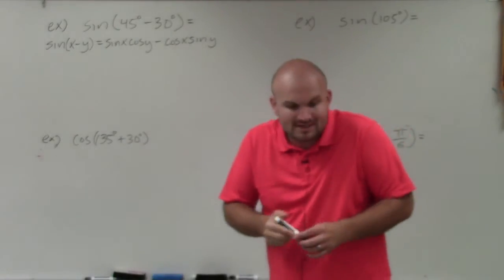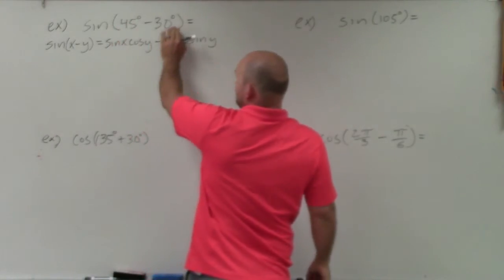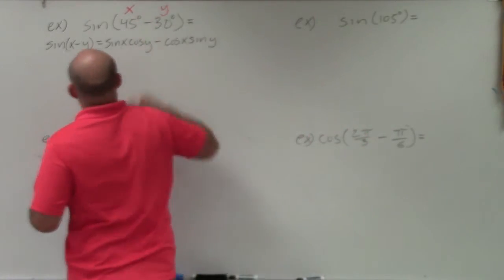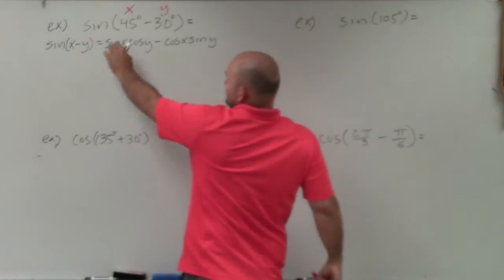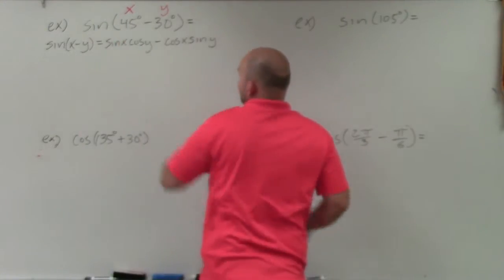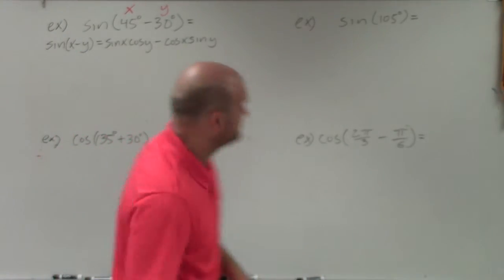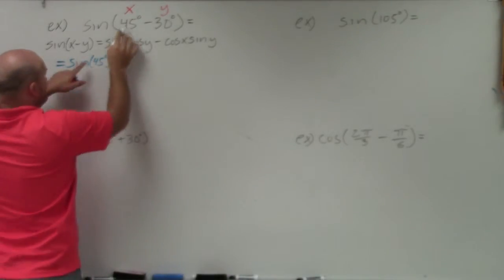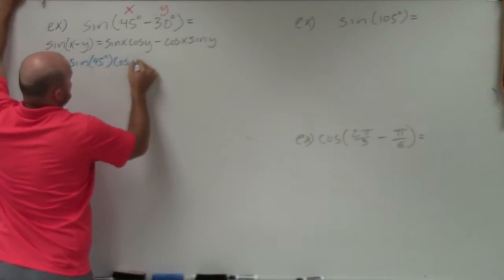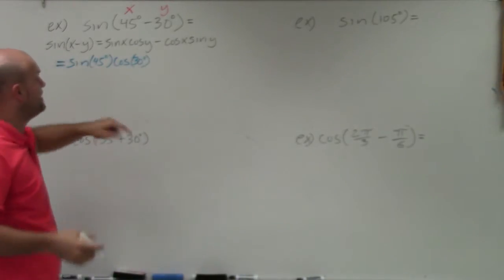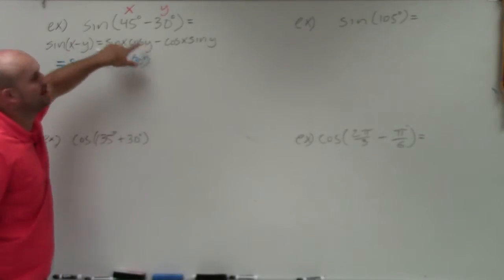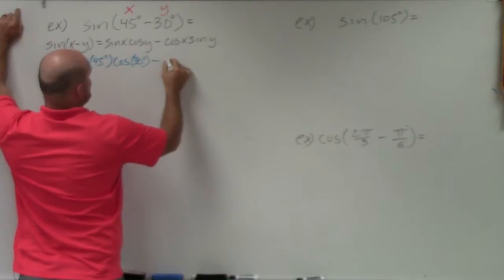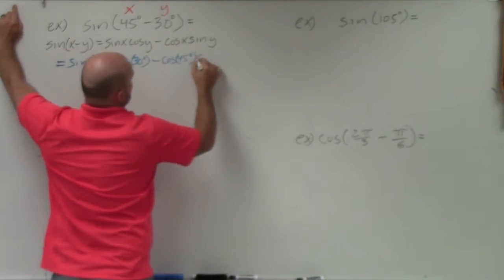All we need to do is identify x and y. We label 45 degrees as x and 30 degrees as y. Then we plug into the formula: sine of 45 times cosine of 30, minus cosine of 45 times sine of 30. Remember, the formula says x minus y — you're plugging in x and y, not negative y. They subtract, but you plug in the positive angle values.